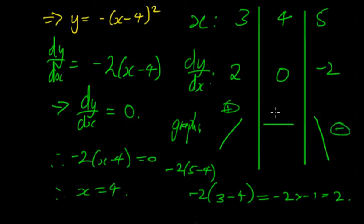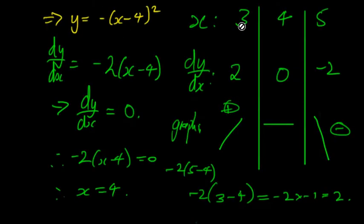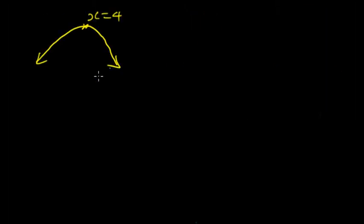Graphically, you can see what the turning point is going to look like. When you actually graph this equation, you're going to get something that looks like an inverted U-shape, with the stationary point at x = 4. That's the first derivative test — you set up the table and look at these different gradients, as well as graphically, just to confirm what type of stationary point it is.